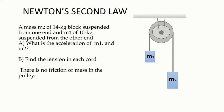The first thing we need to do to find the acceleration is what we call a free-body diagram. It means we need to sketch all the forces applied on each object. Then we use Newton's second law, which states that the force equals the mass times acceleration. So, let's start.